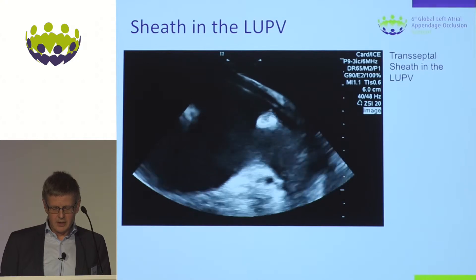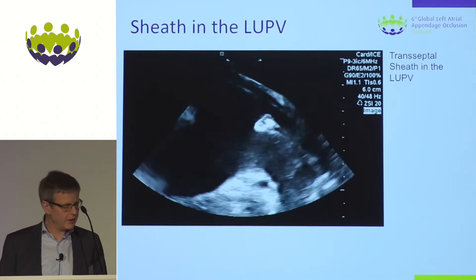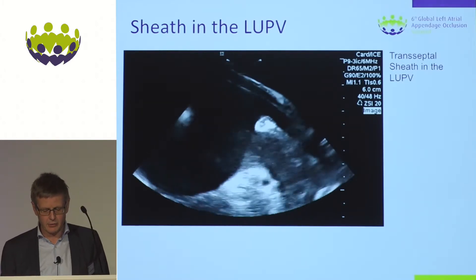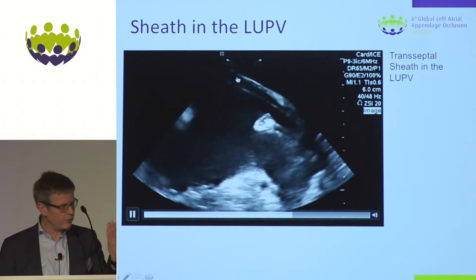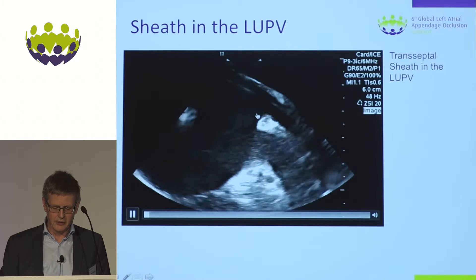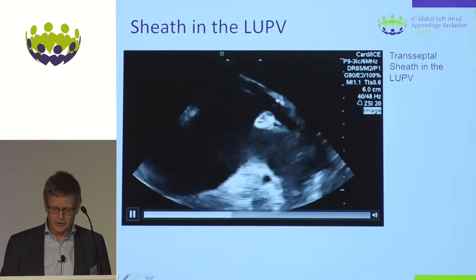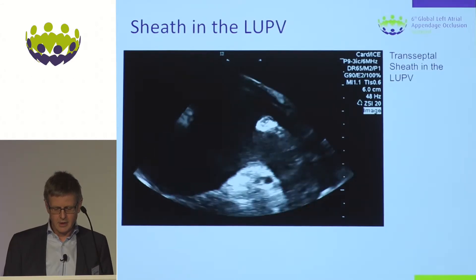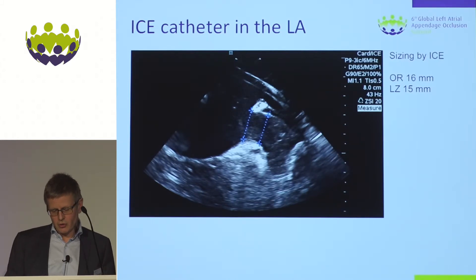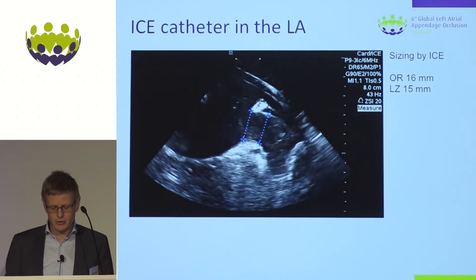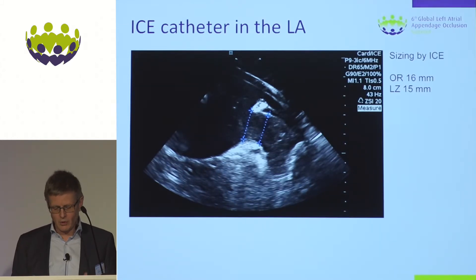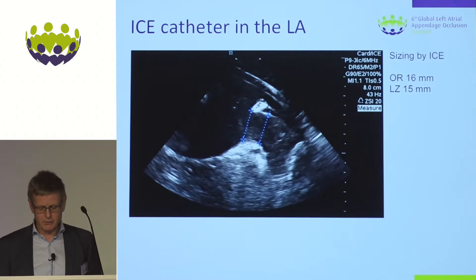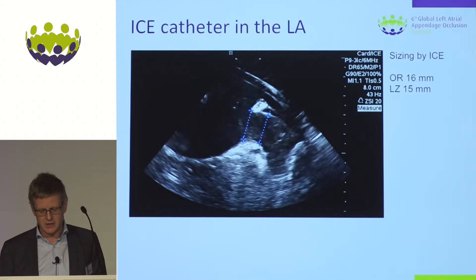The next step is to exchange the transseptal sheath with the delivery sheath, advancing it into the left upper pulmonary vein — easily visualized with the ICE probe. Retracting and angling the ICE probe slightly posteriorly lets you look into the entrance of the left upper pulmonary vein with the delivery sheath of the Amulet device inside. If desired, you can also perform supplementary sizing by ICE, though I don't find this as meaningful as using pre-procedural CT, which takes care of all sizing the day before the procedure.